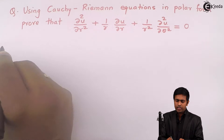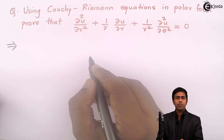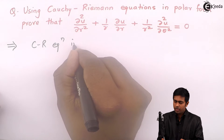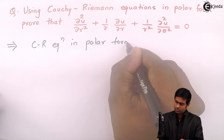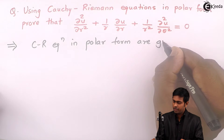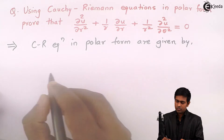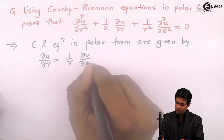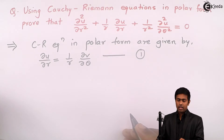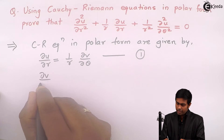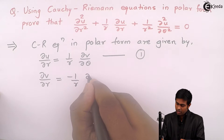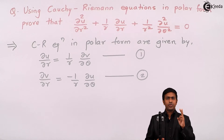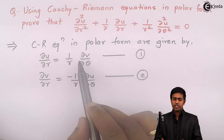Let us start. What are the Cauchy-Riemann equations in polar form? The CR equations in polar form are given by: ∂u/∂r = (1/r)(∂v/∂θ) — let us call this equation number 1 — and ∂v/∂r = -(1/r)(∂u/∂θ) — equation number 2. So these are the two Cauchy-Riemann equations.